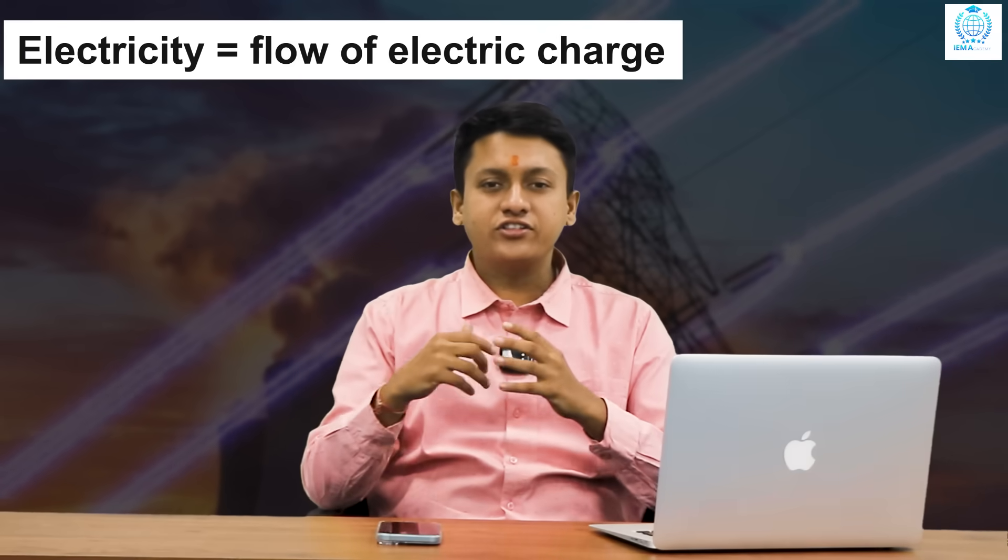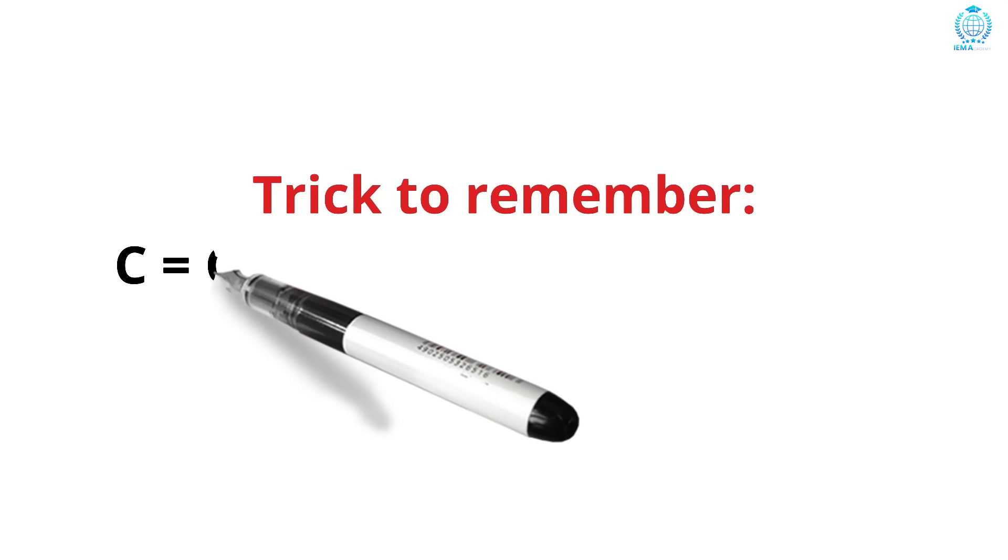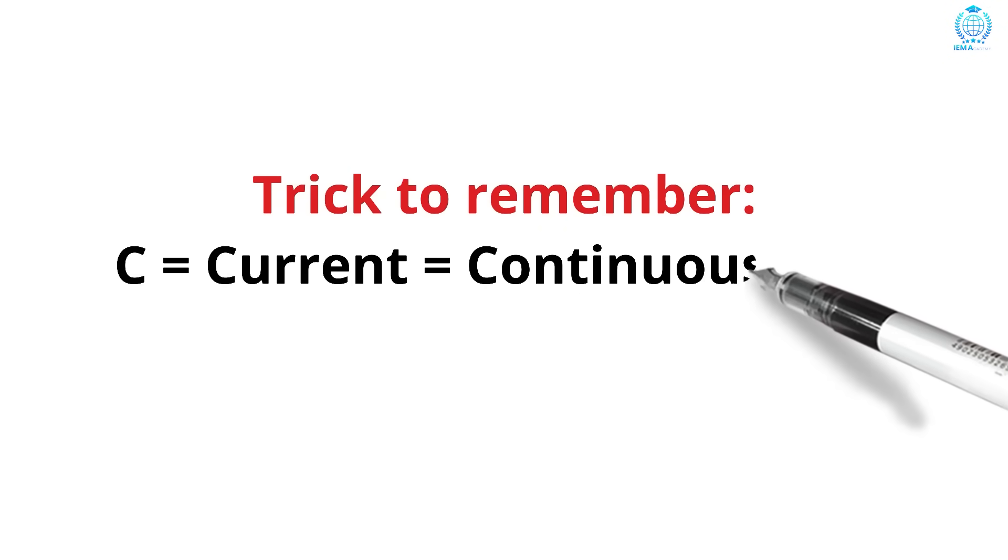Point number one, what is current electricity? Electricity means the flow of electric charge. When this flow of charge happens continuously through a conductor, we call it current electricity. Imagine a river flowing through its path. That's how electrons flow through a wire. Trick to remember, C for current equals continuous flow.